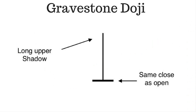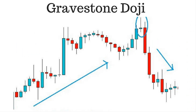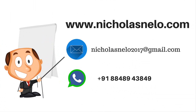The Gravestone Doji is viewed as a bearish reversal candlestick pattern that mainly occurs at the top of uptrends. It helps traders visually see where resistance and supply is likely located. After an uptrend, the Gravestone Doji can signal that the uptrend could be over and that long positions could potentially be exited. Hope you like this video — next lesson we will discuss about a new topic: pattern study.